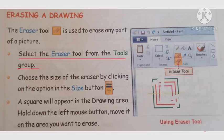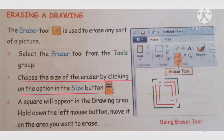Select the eraser tool from the tools group — the eraser tool is available in your home tab. Choose the size of the eraser by clicking on the option in the size button. Go to the size button and select the eraser size that you need.